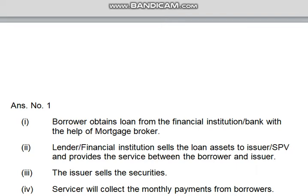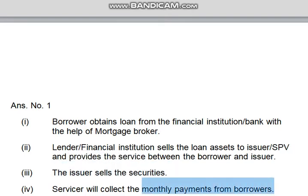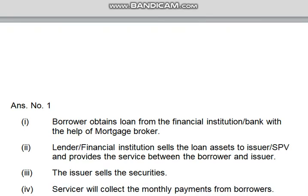Number 3 is: the issuer sells the securities. Number 4 is: the service provider will collect the monthly payments from the borrower.